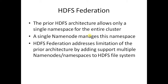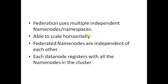Earlier this feature was not there — only a single name node was supported. Hadoop HDFS Federation addresses the limitation of HDFS architecture by adding multiple name nodes to the HDFS file system. The main properties are: federation uses multiple independent name nodes, and we can horizontally scale our namespace. These federated name nodes are independent of each other, and the data nodes always communicate with all the name nodes in the cluster.